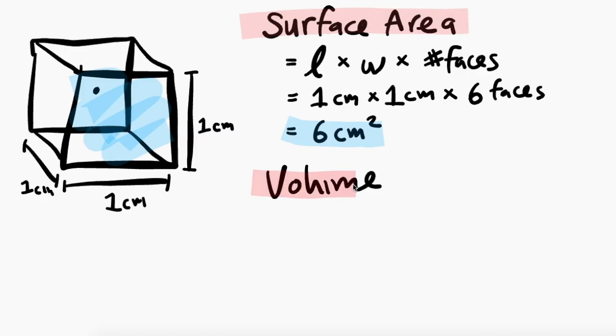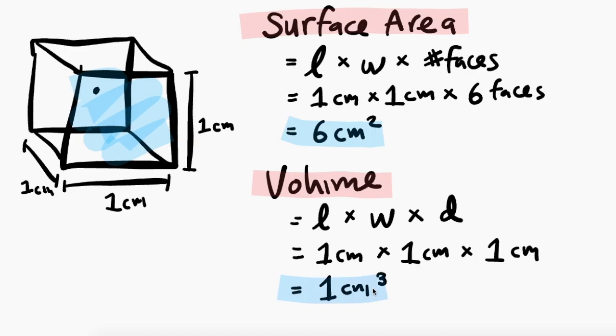Volume. To solve the volume of a cube, we simply multiply length times width times depth. That's 1 times 1 times 1, which is 1 cubic centimeter.